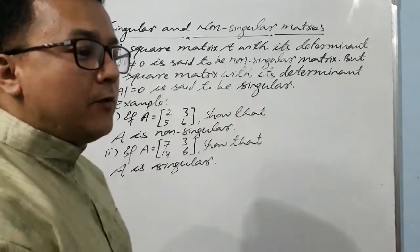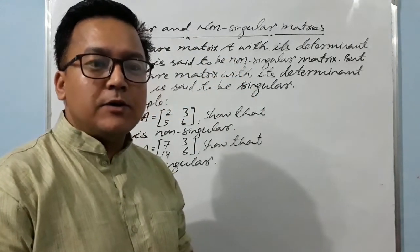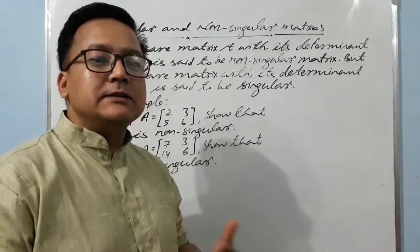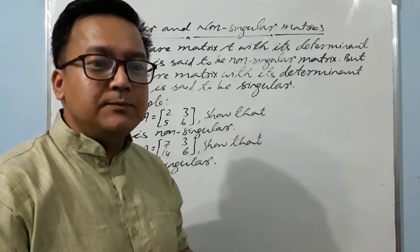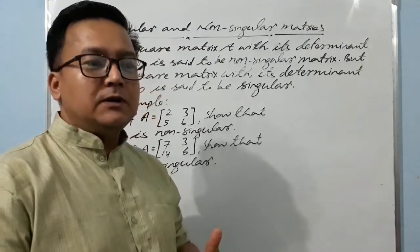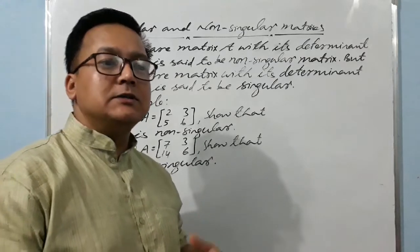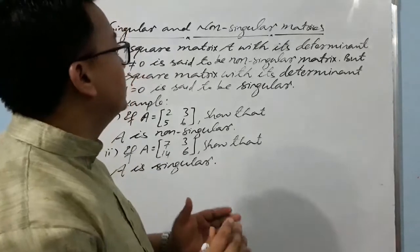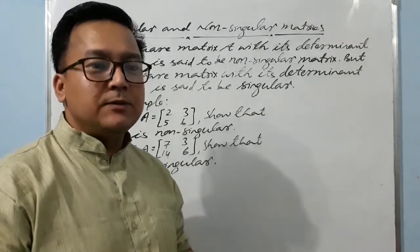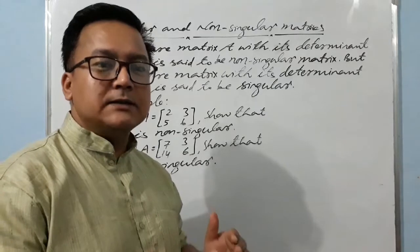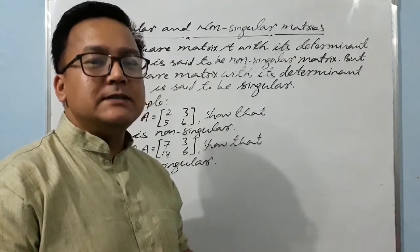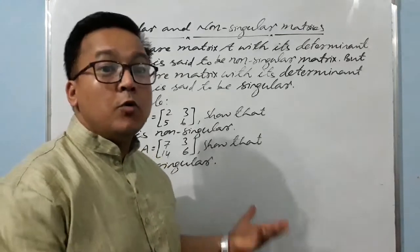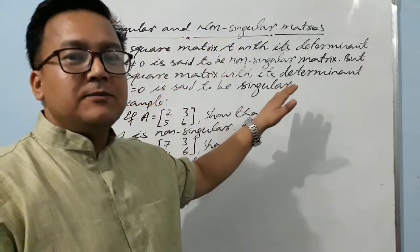Before finding the inverse of a square matrix, or finding the system of linear equations using Cramer's rule or a matrix method, we have to know about singular and non-singular matrices. We can find the inverse only if the square matrix is non-singular. If it is singular, we cannot find the inverse.